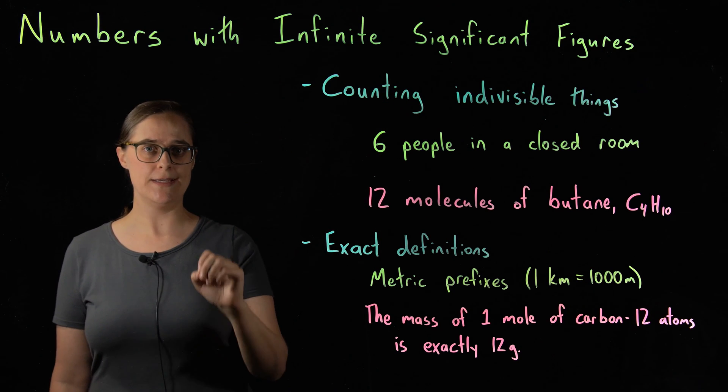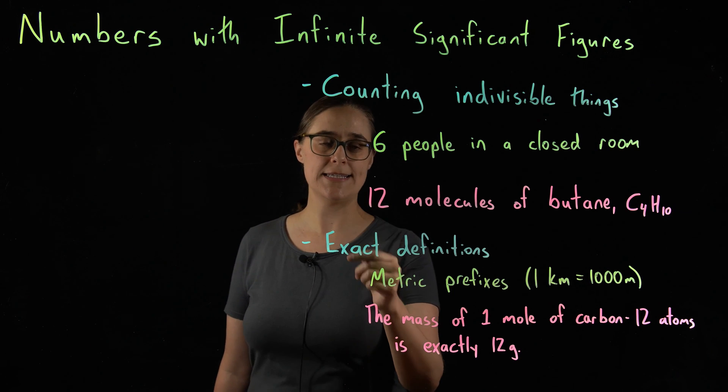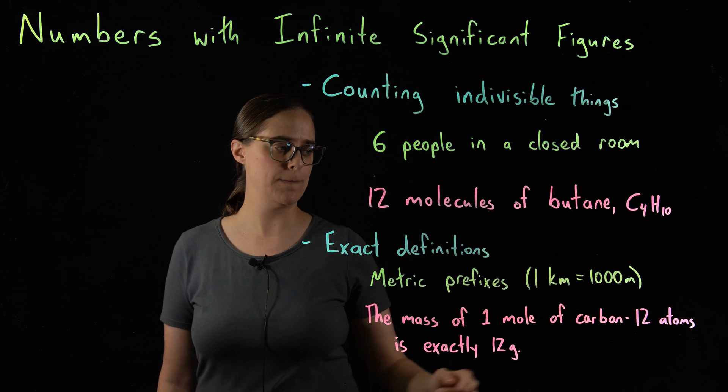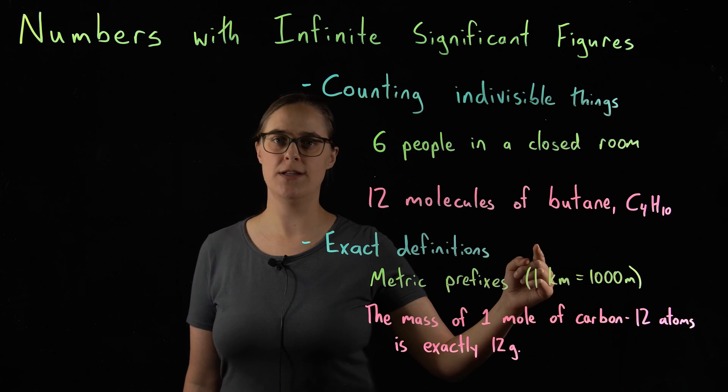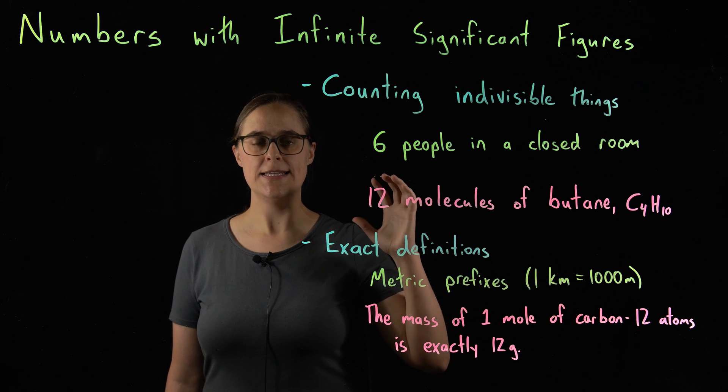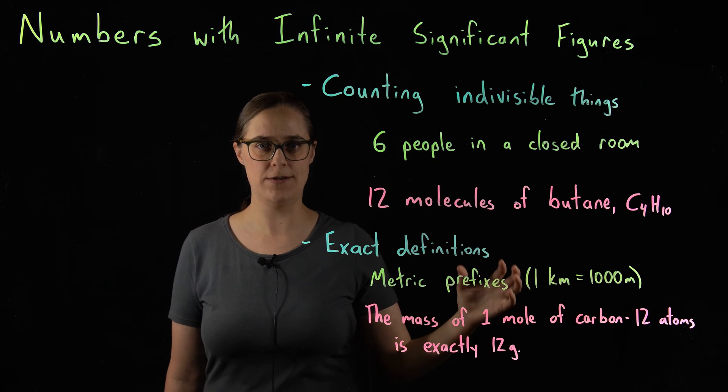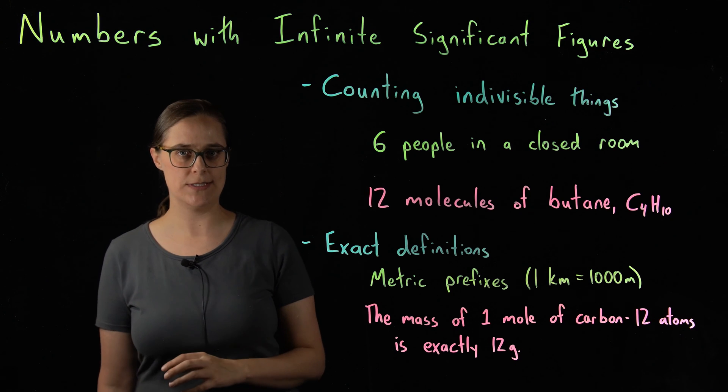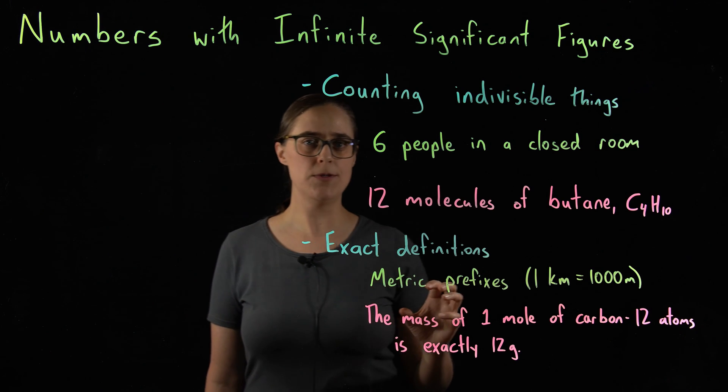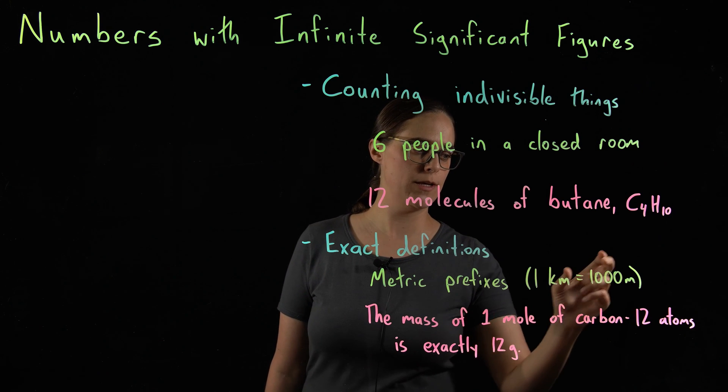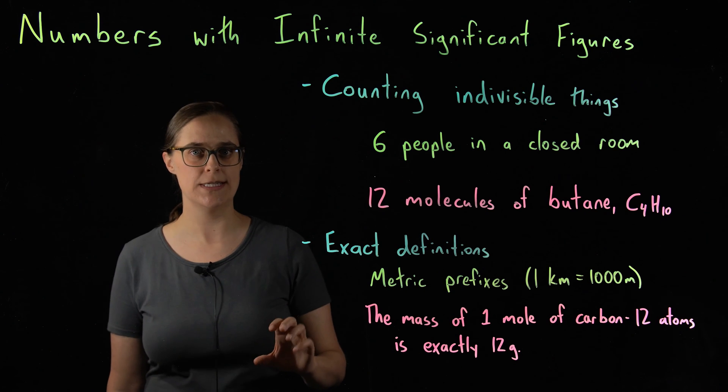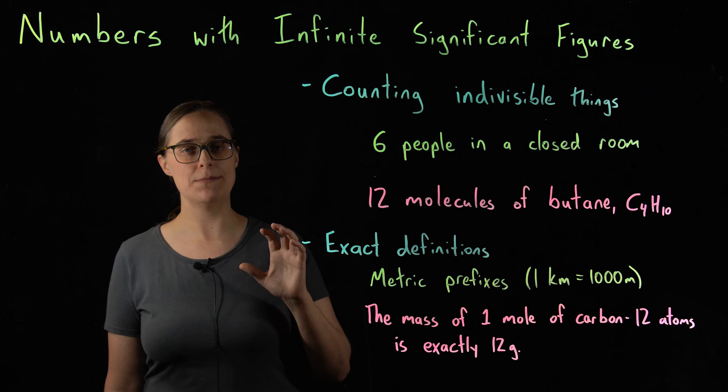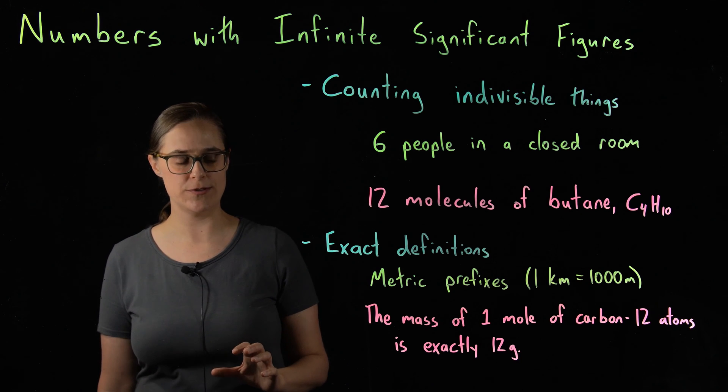Another case when you have infinite significant figures is exact definitions. For example, metric prefixes. The definition of a metric prefix is that it has an infinite number of significant figures. So kilo is exactly 1,000 times greater. So if I am using the information that 1 kilometer equals 1,000 meters to convert between units, those two numbers can be treated as if they have infinite significant figures.